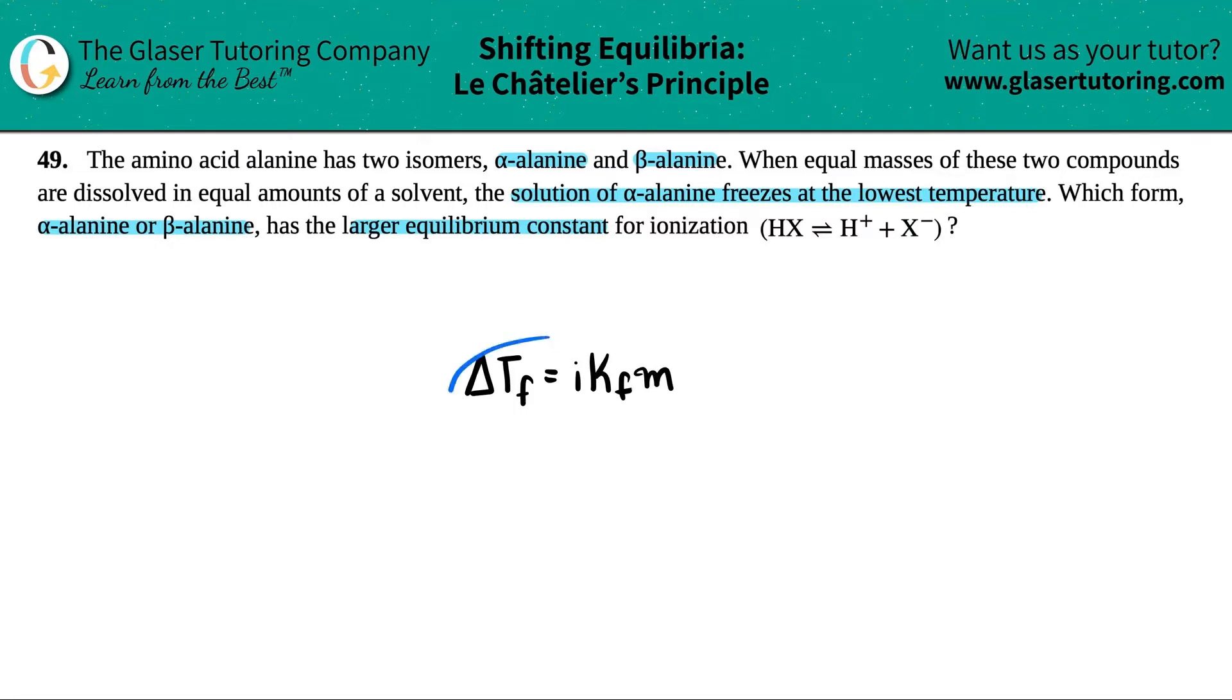You might recall there was a formula delta Tf equals i times Kf times M. In this formula, Tf is the change in the freezing point, because it's a delta. And it's linked to a Kf value, which is the freezing point dissociation constant times the molality.